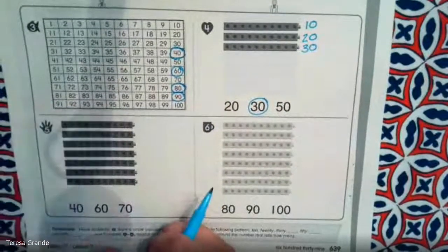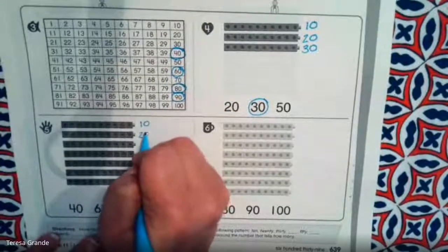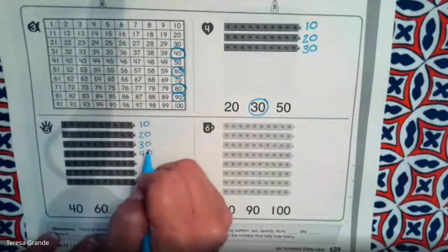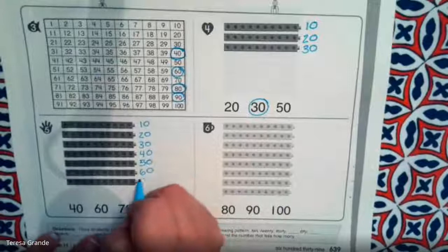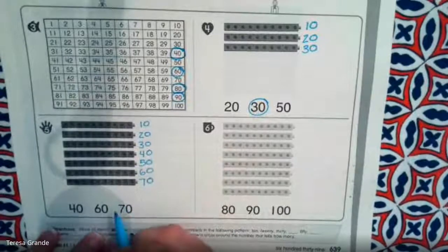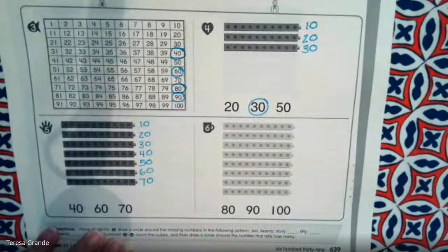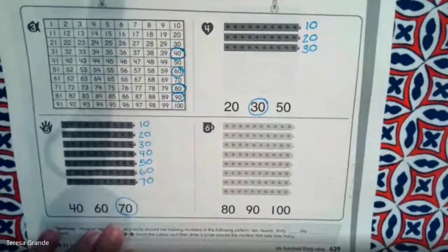Let's practice counting by 10s here. 10, 20, 30, 40, 50, 60, 70. Very good. We counted by 10s the whole way to 70. Now, which one is the number 70? Very good. This is the number 70.